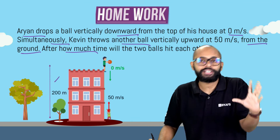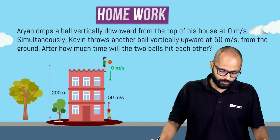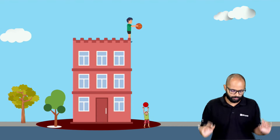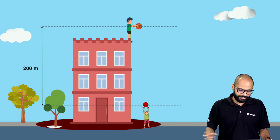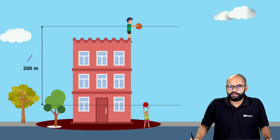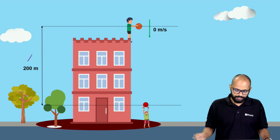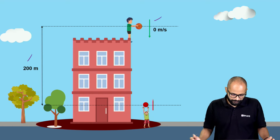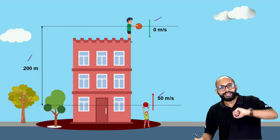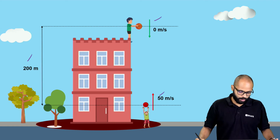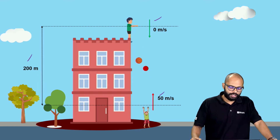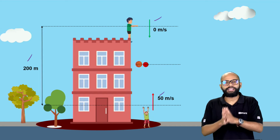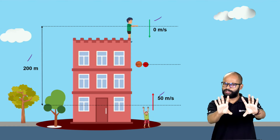The height or distance between the two balls in the initial condition is 200 meters. So we have the distance between the two balls is 200. Aryan is dropping the ball at 0 meter per second, Kevin is throwing it up with 50 meter per second. The question is: after how much time will these two balls hit each other?